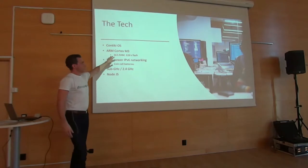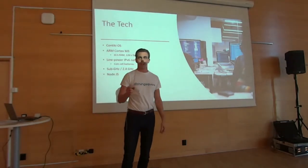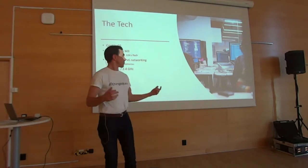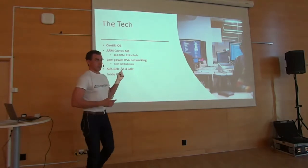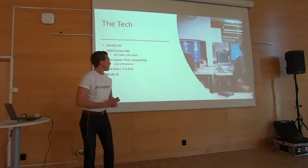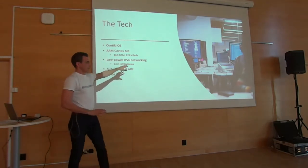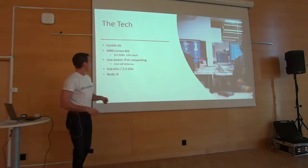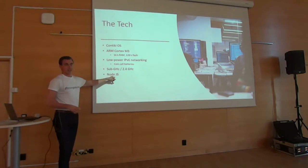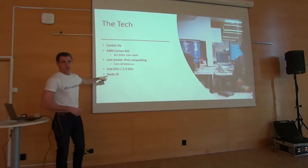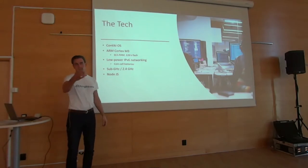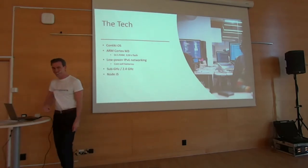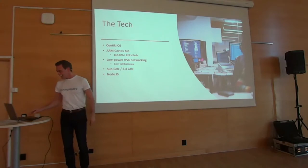So the tech that we do, we use the Contiki operating system inside those chips that we have deployed. Typically ARM Cortex M3s, those are the microprocessors that are in those wireless chips. They're pretty small, 16K RAM, 128K Flash. And the most popular version that we are using right now is pretty tight. We're using low power IPv6 networking, coin cell batteries. Some of this is really quite hard to get that right. Sub one gigahertz, 2.4 gigahertz. Node.js, so it's really C and JavaScript.